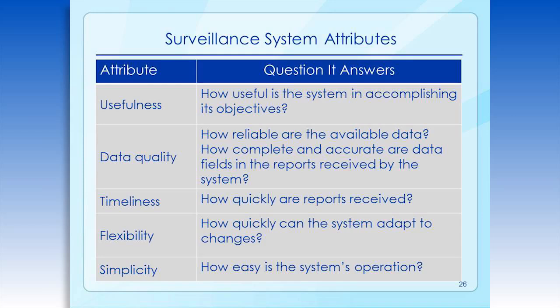For some conditions, timeliness is critical to prevent further illness, while in others it may be less important. Flexibility looks at how quickly the system can adapt to changes. Simplicity considers whether the system is easy to operate. I set up the first computerized surveillance system for the Cook County Health Department. The first iteration included fields for almost all the information we collected during investigations. Within a week, we were so far behind in data entry that we scrapped the whole system and started again. The new system had only six data fields for each report and worked fine. So, simplicity is an important attribute to consider.